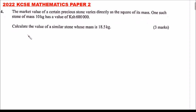We have a topic known as variations from form 3, so that's what we are going to apply. From the statement we have been given, the value of the stone varies directly as a square of its mass. So we can say value varies directly as its mass squared. From this we can form an equation and say V equals K M squared, where K is a constant.